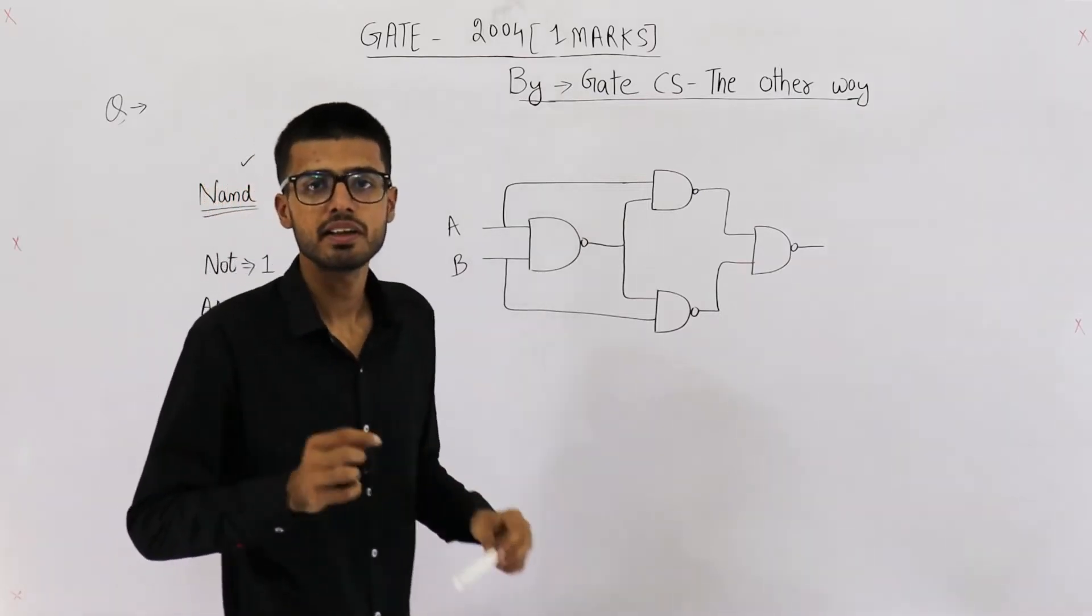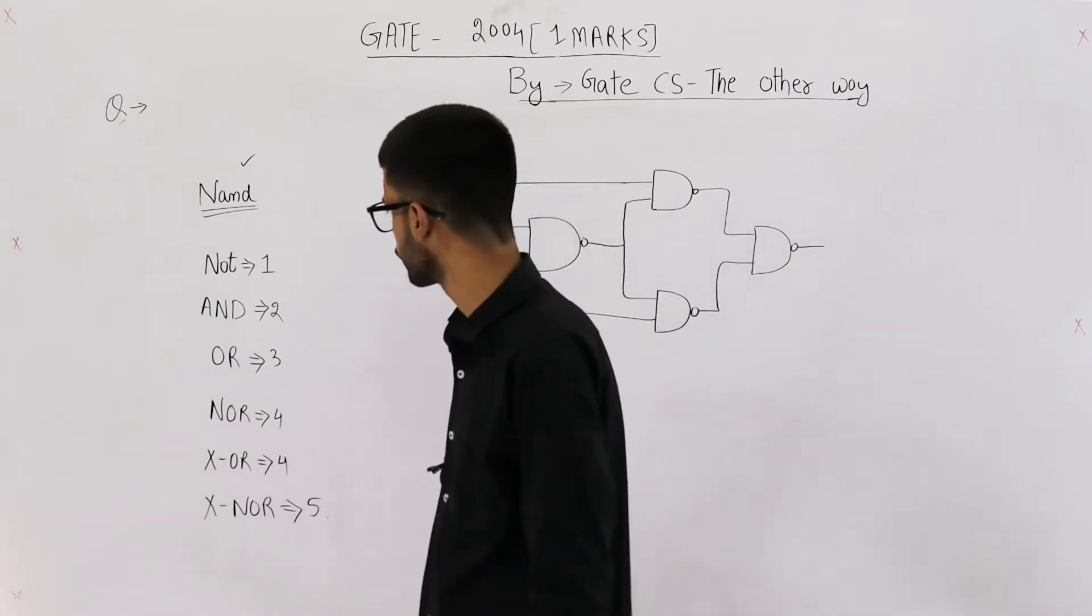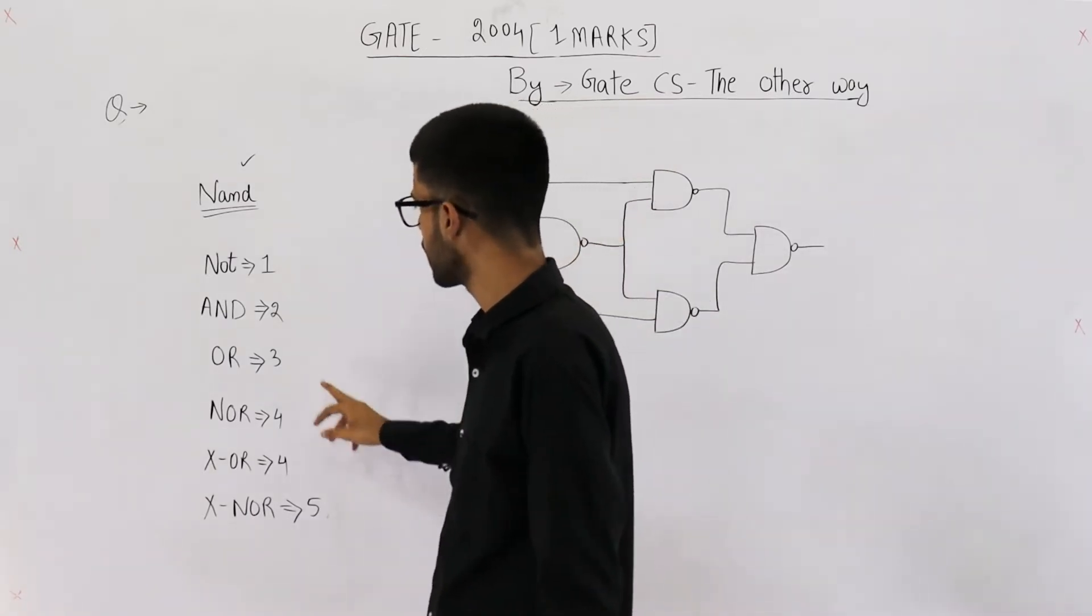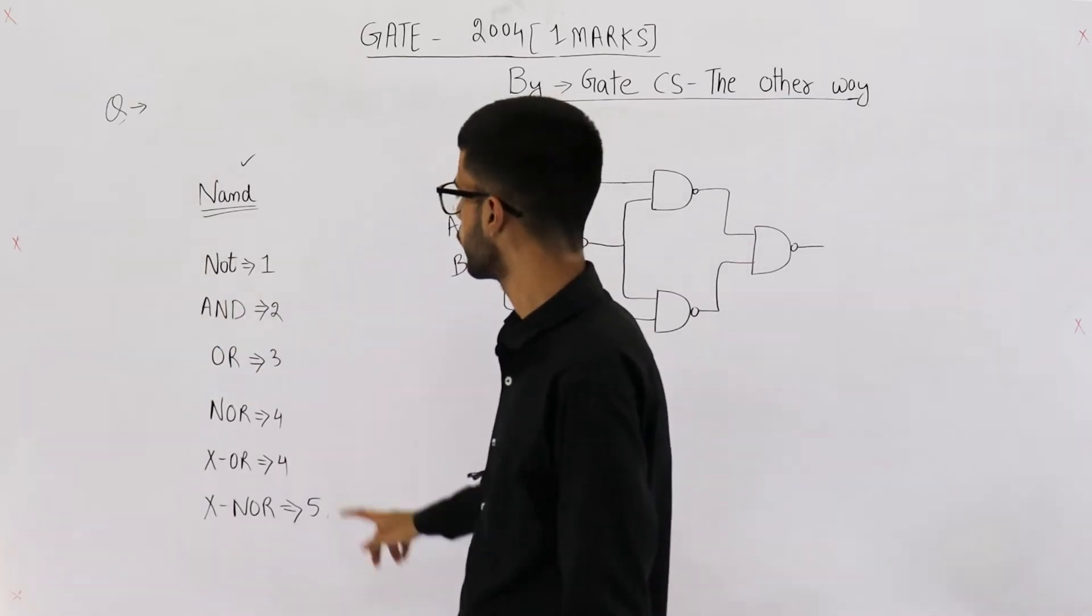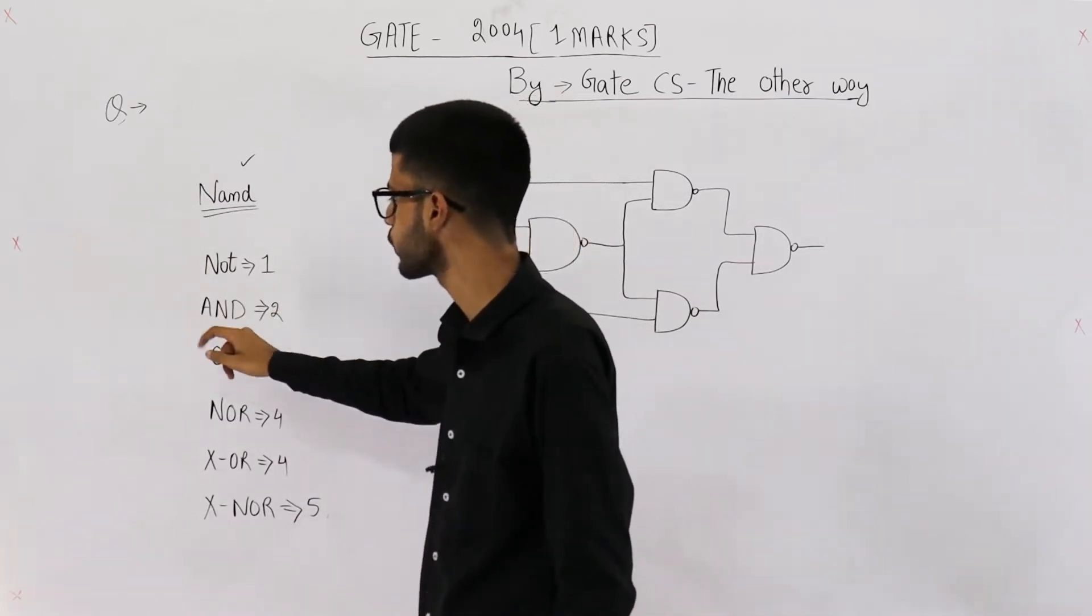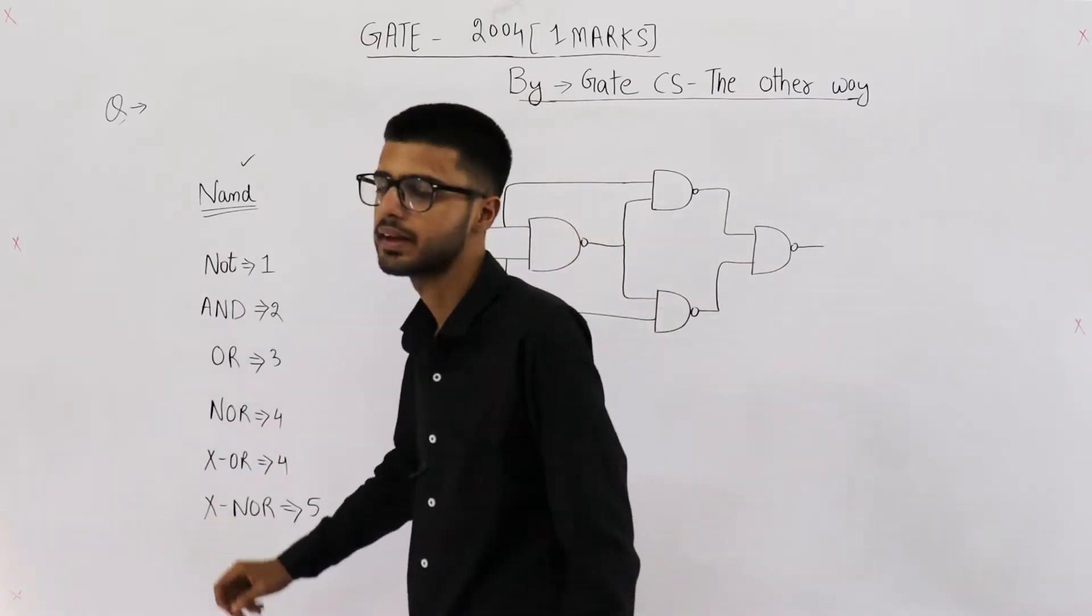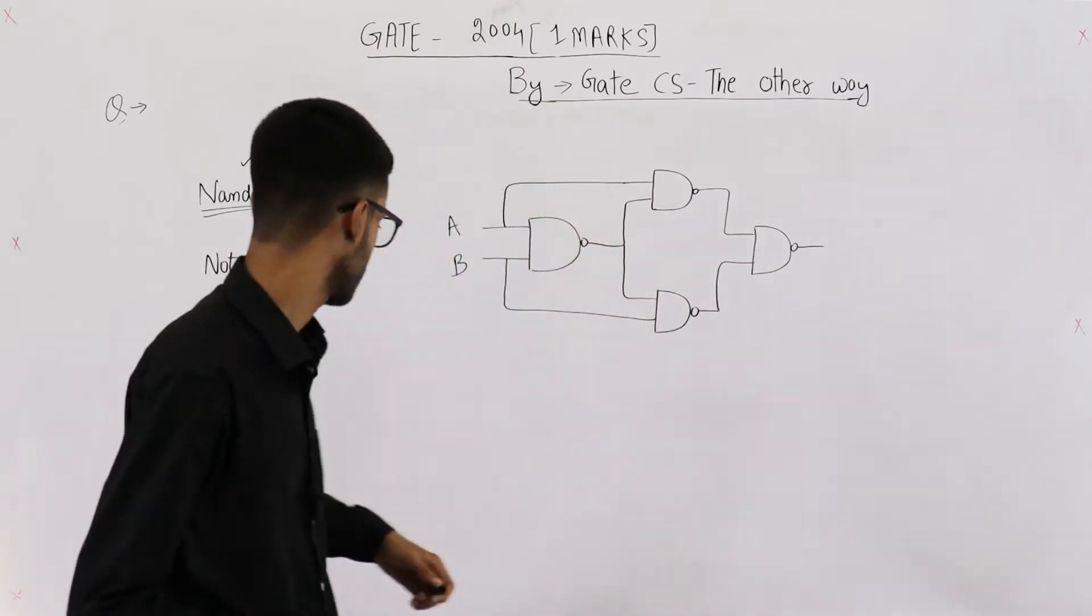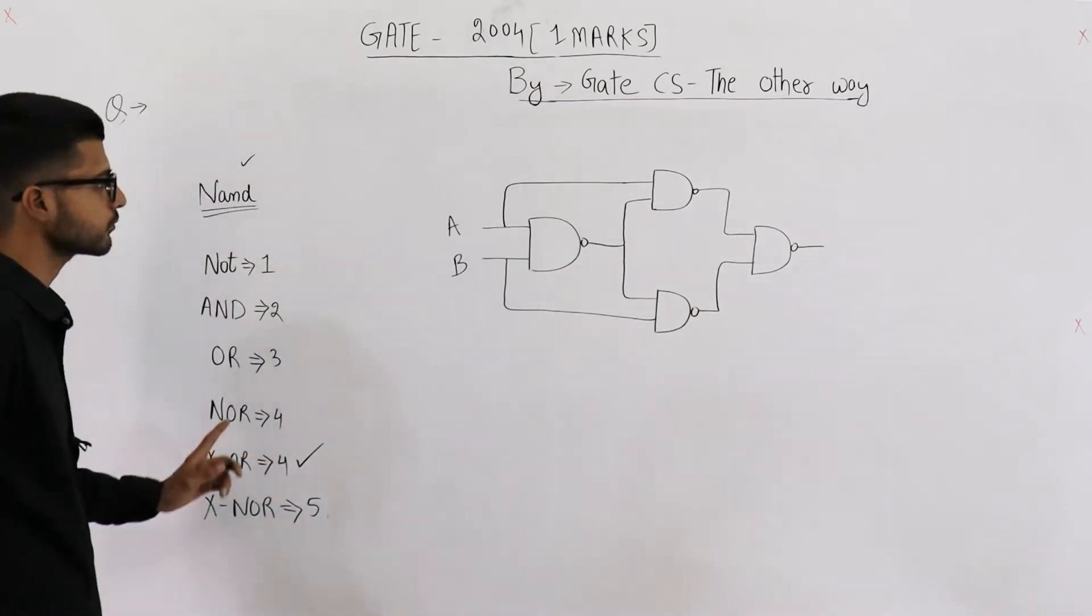I've shown you in my theory lectures that two NAND gates are required to implement a NOT gate, two NAND gates are required to implement an AND gate. Similarly, you require four NAND gates to implement a XOR gate. That means your answer is four.